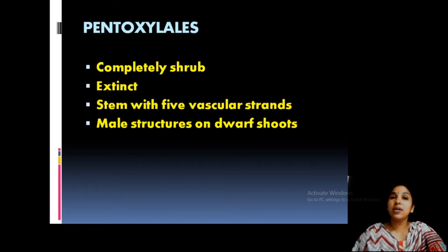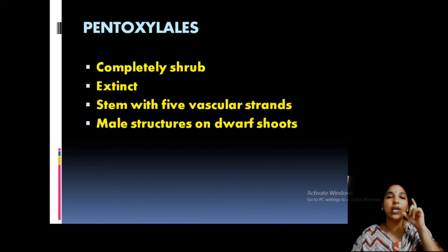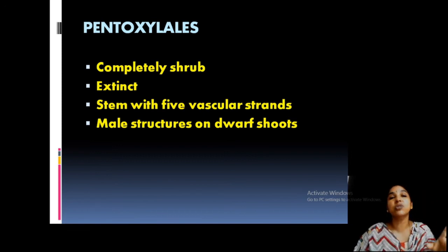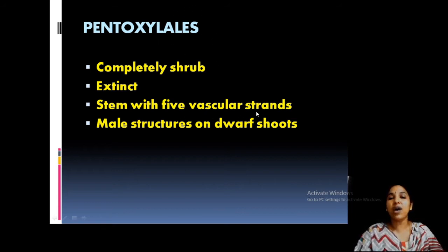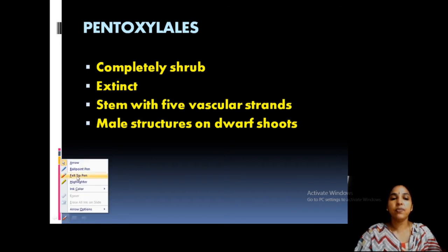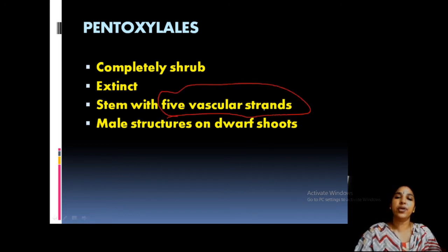The third order is Pentoxylales, which is completely extinct. Its main peculiar feature is the presence of five vascular strands. The term indicates 'pento' meaning five — five xylem vascular strands are present in Pentoxylon. This is a very important point. The male structure is present in dwarf shoots.